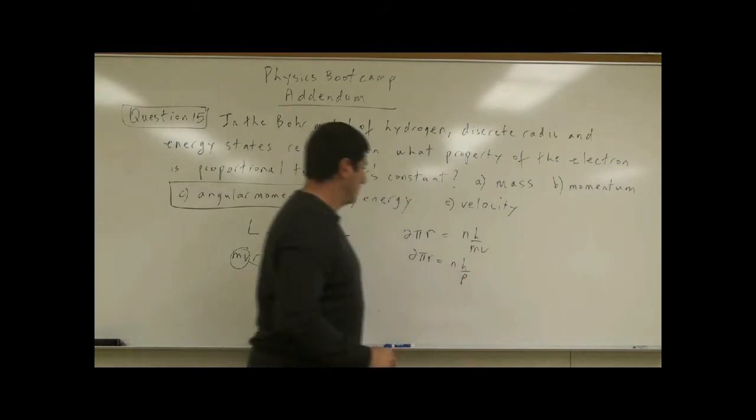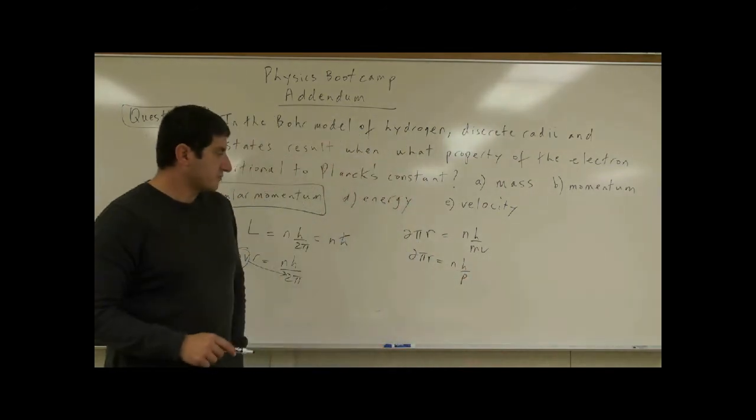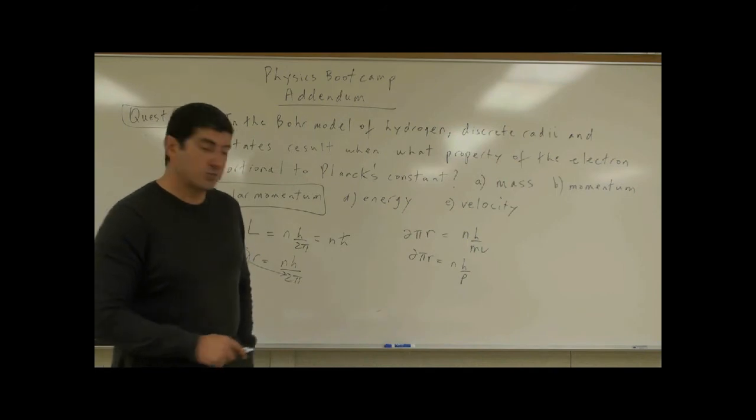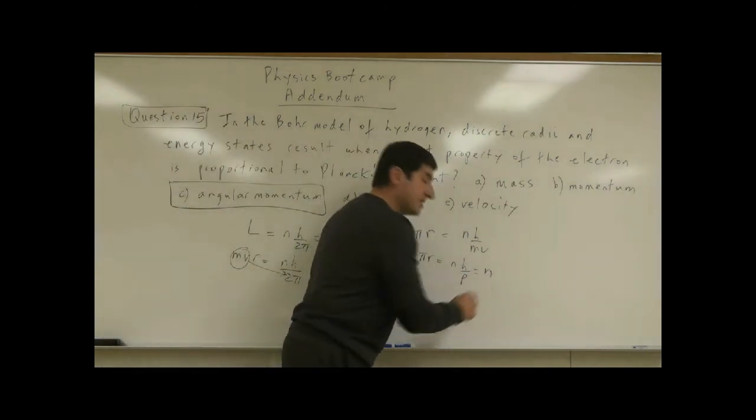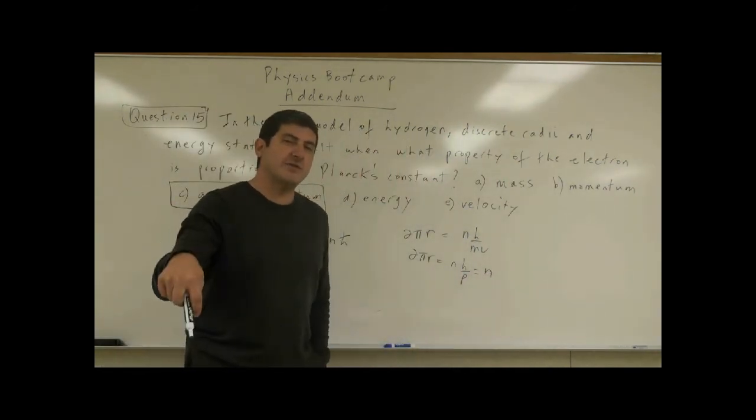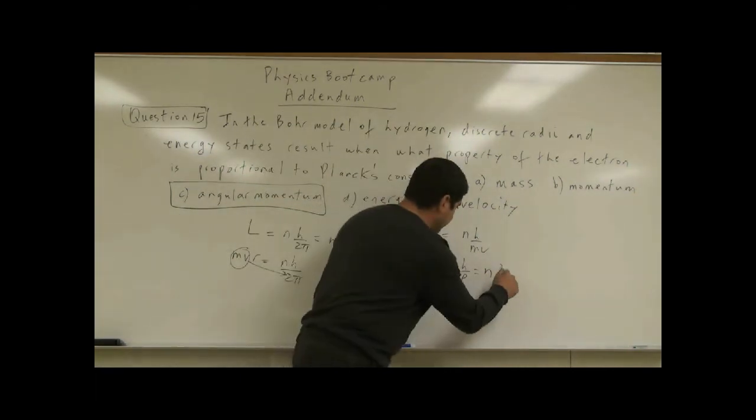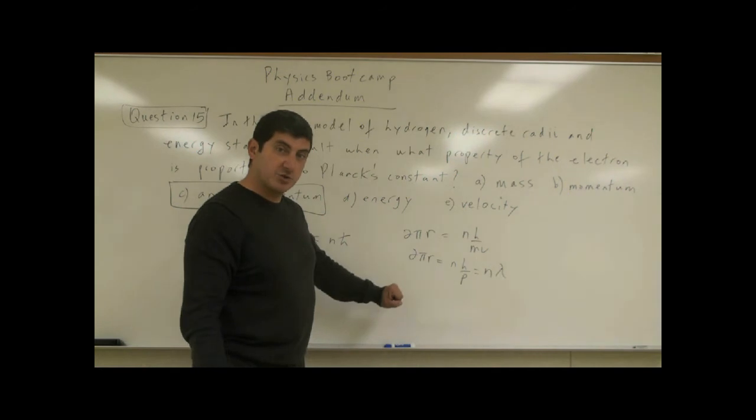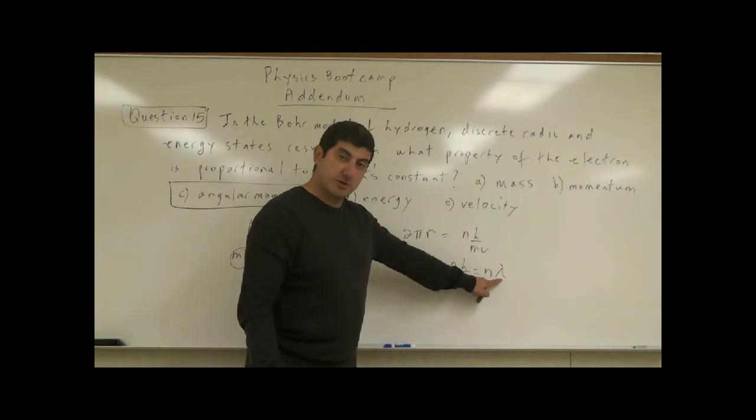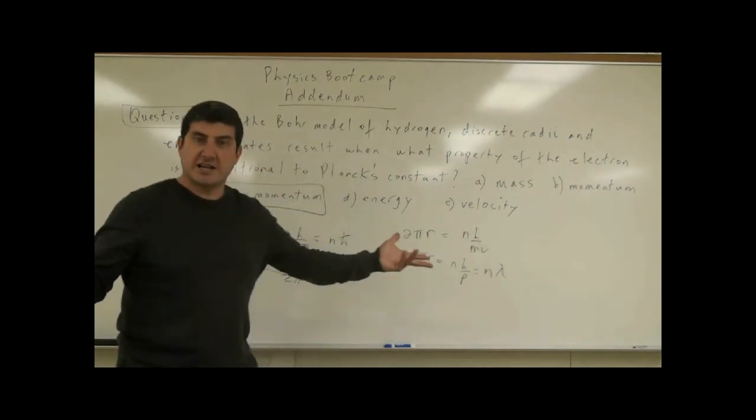H over p. And h over p is what? It's the wavelength of the wave of the electron as proposed by de Broglie. H over mv is lambda, so the circumference of the electron orbit is integer multiples of the wavelength, we get the quantized energy states.